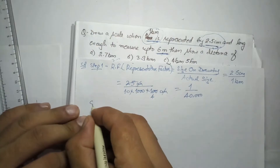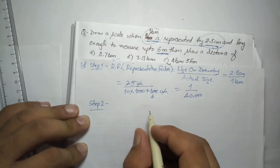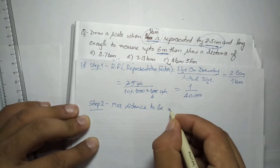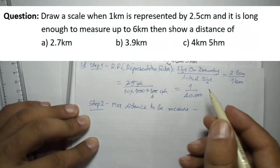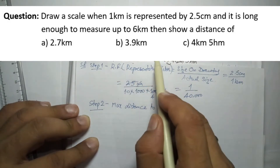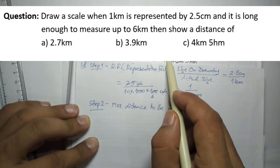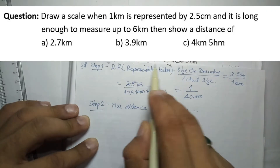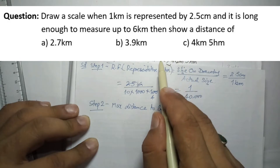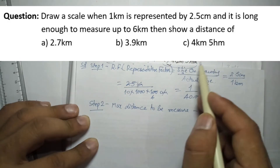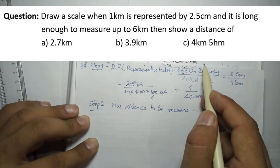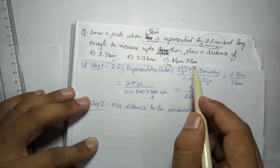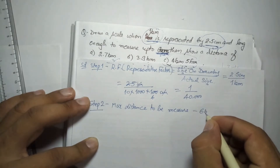Step 2 is to find the maximum distance to be measured. In this question it is directly given: long enough to measure up to 6 kilometers. If it were not given, you would check the values to show, take the biggest value, and round up — so 4 km 5 hectometers would round up to 5 km. Here the maximum distance is given as 6 km.